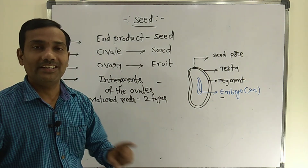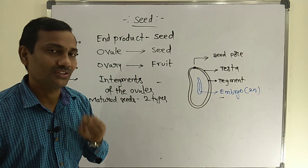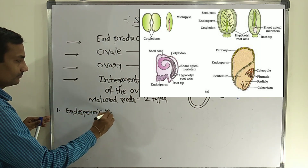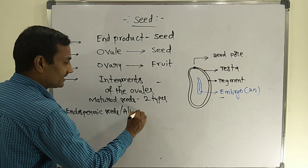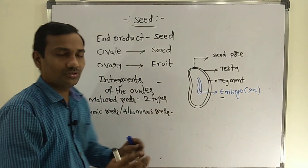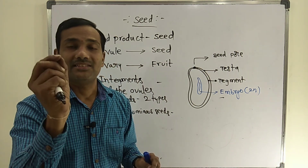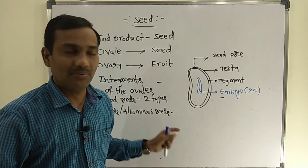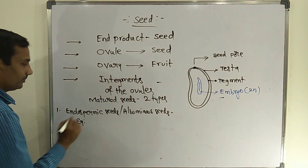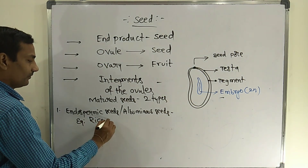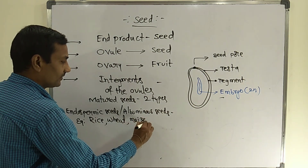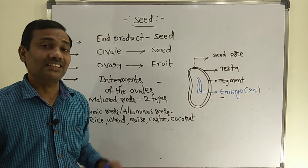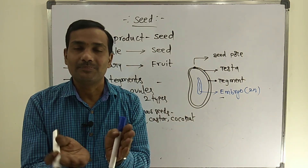The first category is endospermic seeds, also called albuminous seeds. After maturation of the seed, if some amount of endosperm is found inside, such seeds are called endospermic seeds. Examples of endospermic seeds include rice, wheat, maize, castor, and coconut. All these seeds after maturation consist of some amount of endosperm.